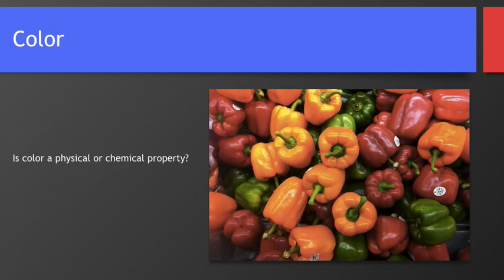Color is a physical property. I can look at these different bell peppers and I can see their color without having to change what they are. I can see there are some orange bell peppers, some green ones, some red ones. I can see the color of the sticker on the bell peppers and I don't have to change anything about the bell pepper. It's still just a pepper.